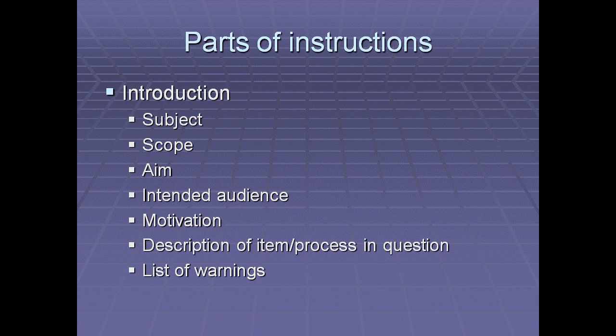The introduction contains a subject, scope, aim, intended audience, motivation, description of items, and list of warnings. The subject is simply what the instructions are about — for example, 'Installation Guide for Microsoft Office.' The scope describes how much information these instructions will cover. In that example, the scope would be that these instructions are for installing Microsoft Office, not for using it. The aim is essentially the same — what exactly are these instructions going to accomplish.